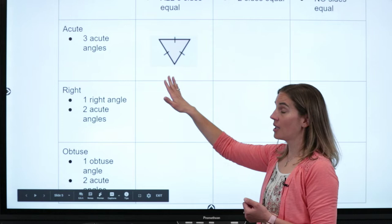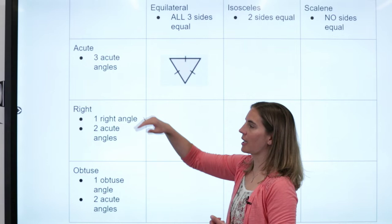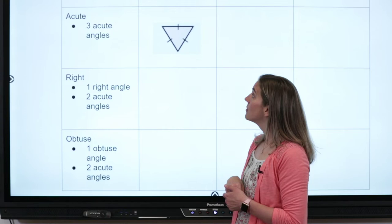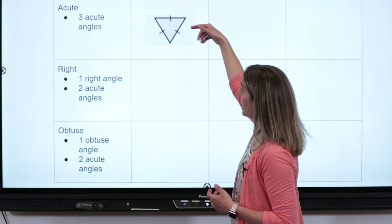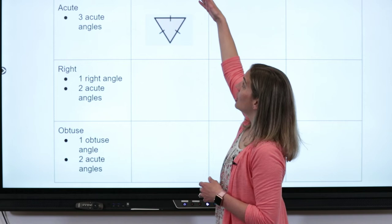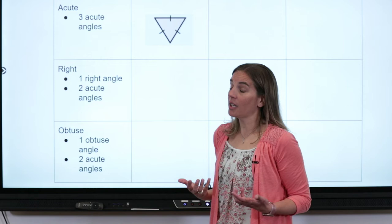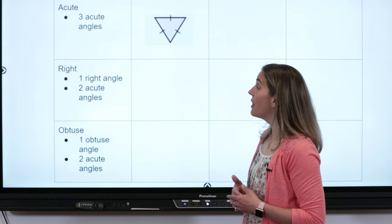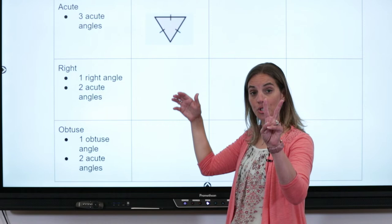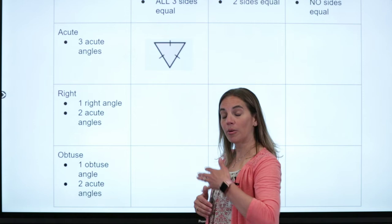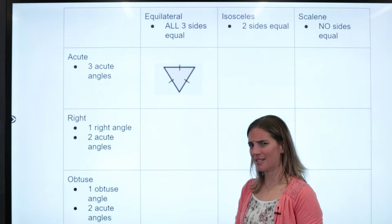Let's take a look at this first triangle. Notice the little tick marks on the sides — that means all of those sides are the same, so this is an equilateral triangle. Now look at all three angles in that triangle. They're acute angles, which means this triangle is called an acute equilateral triangle. That's two names — its first name is acute, its last name is equilateral.